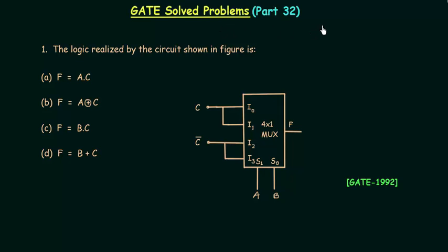From this part I will start solving combinational circuits problems that appeared in the GATE exam. The first problem is taken from the GATE 1992 exam and this problem is based on a 4-to-1 multiplexer.